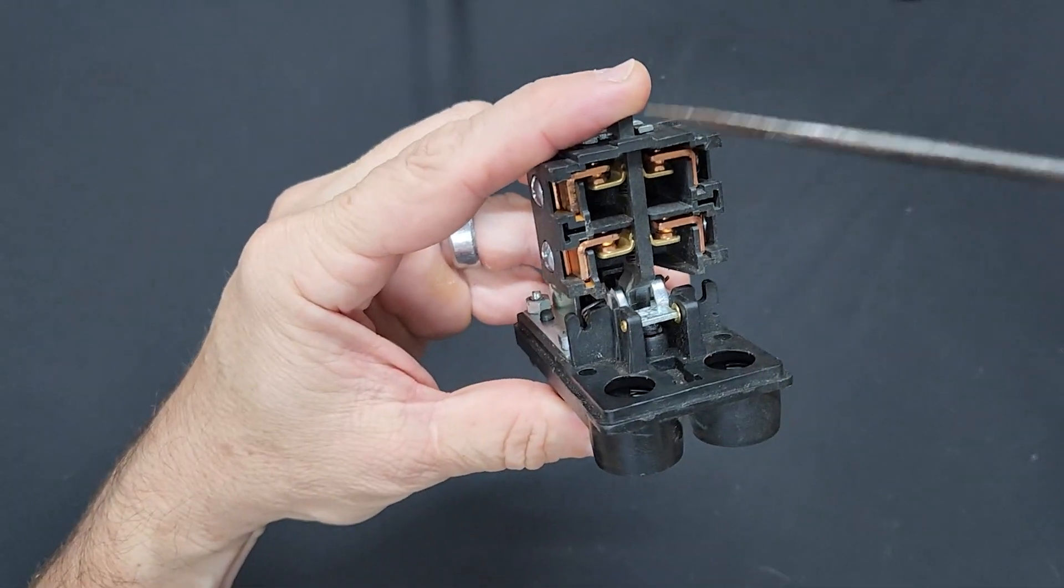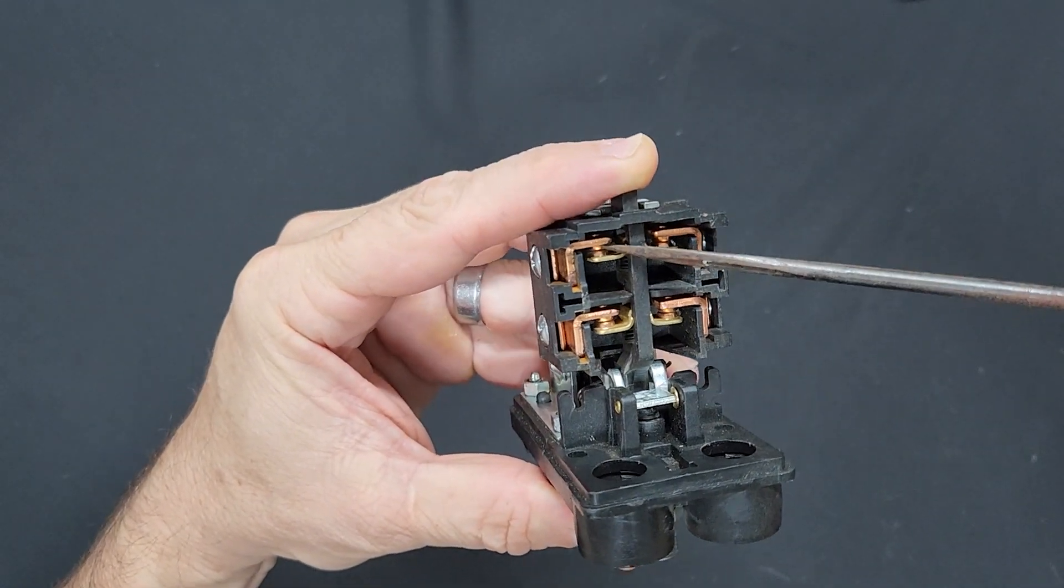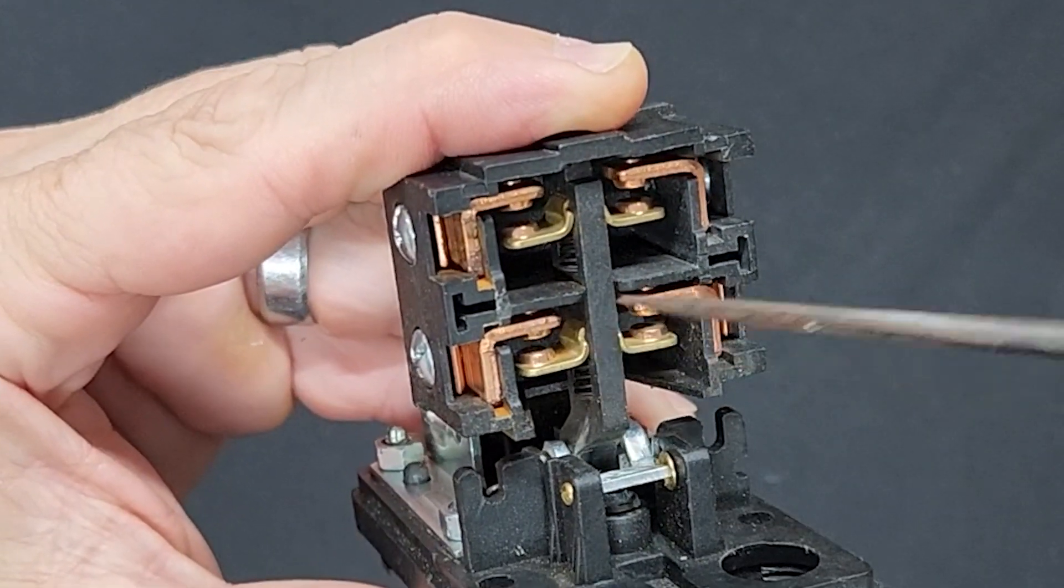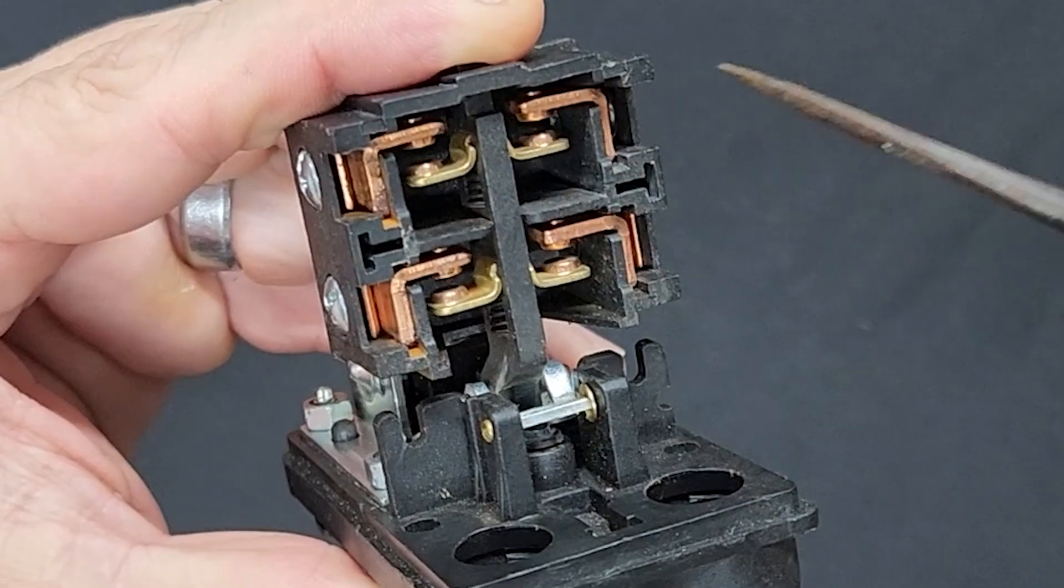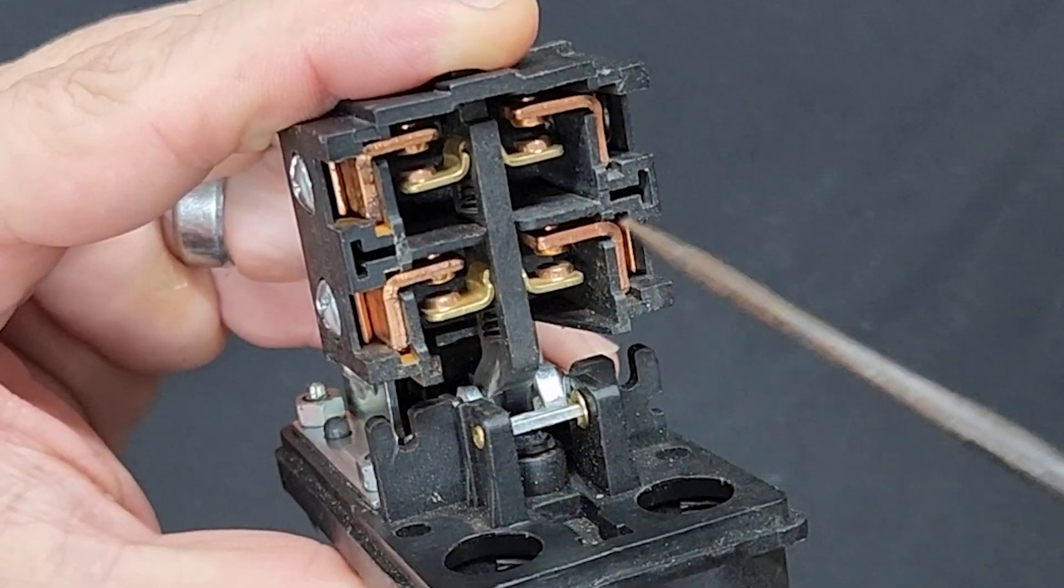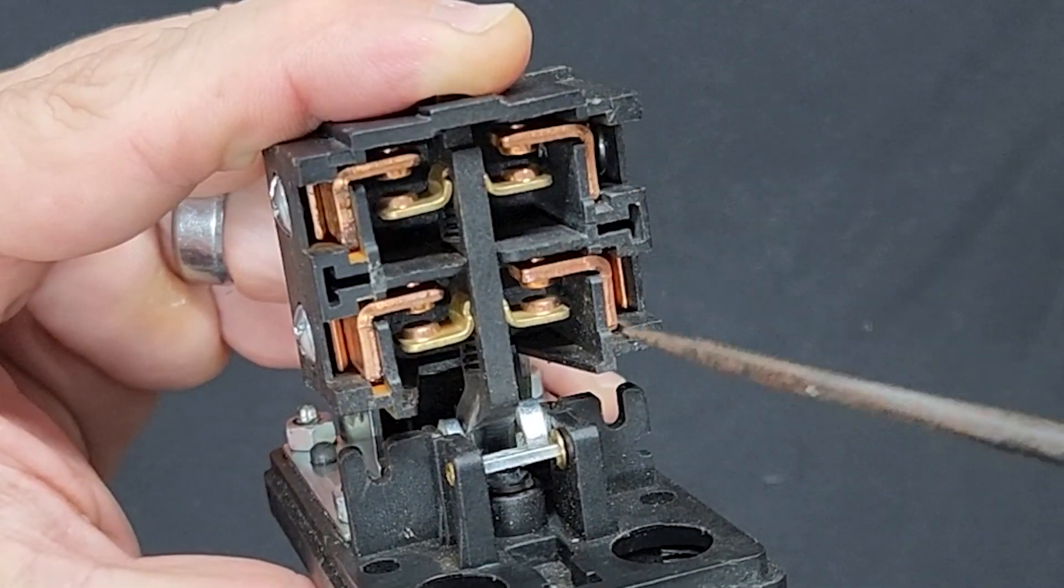Now if we look over here, these are the contact switches. When they are open, this is in the open position, this means the motor is off, there is no circuit that actually transfers across between your live and your neutral.